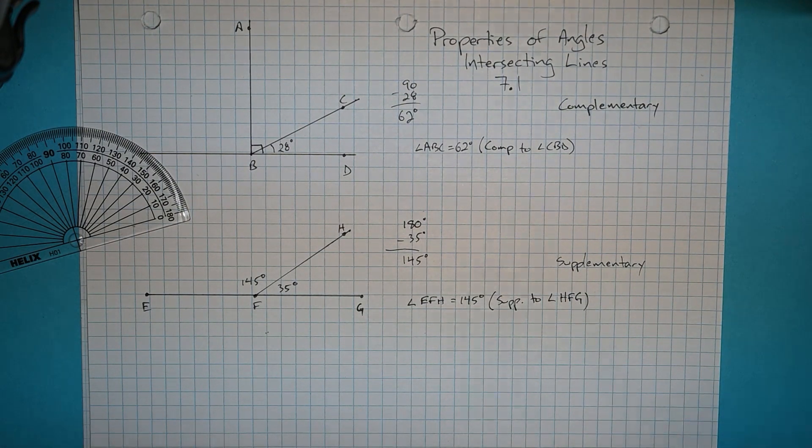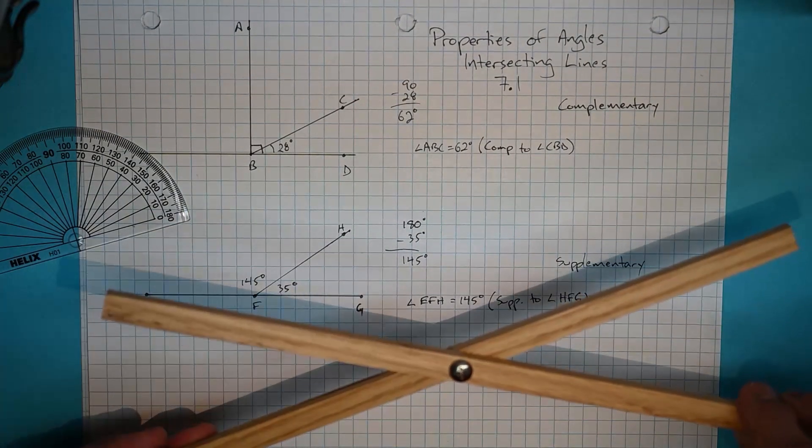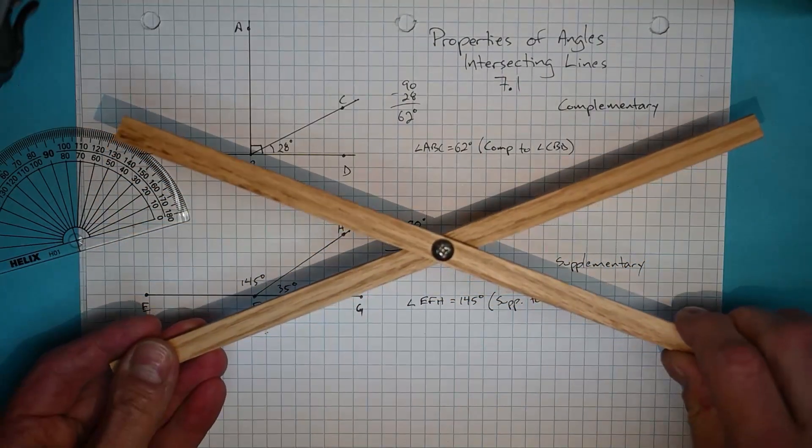So that takes us to the next concept we need to look at, which is what happens when two lines intersect and just pass right through each other. It's the situation we have here.